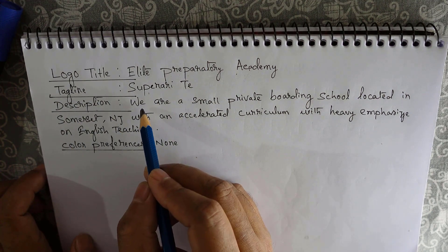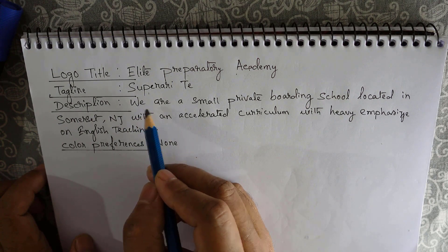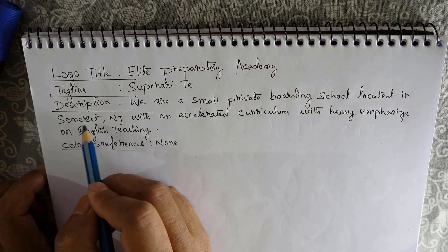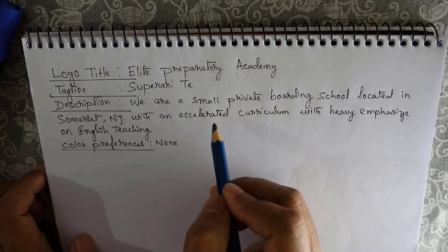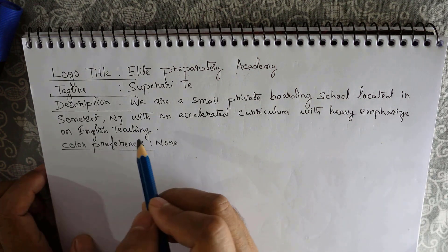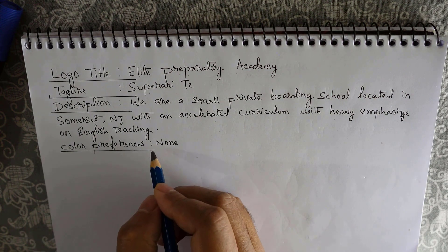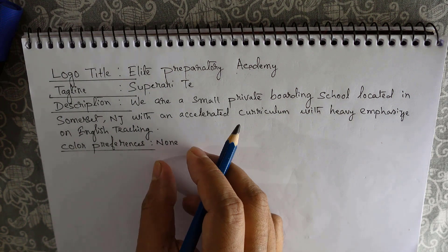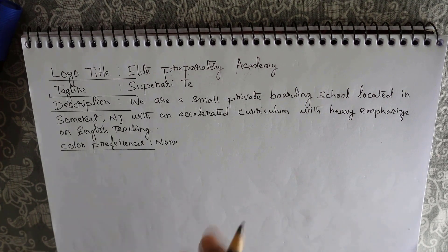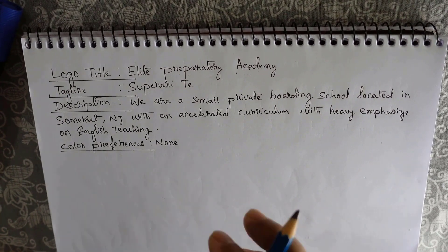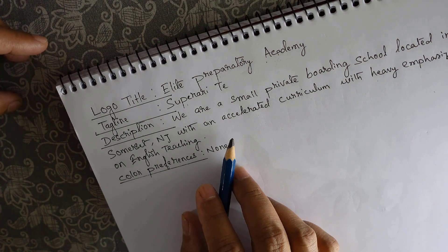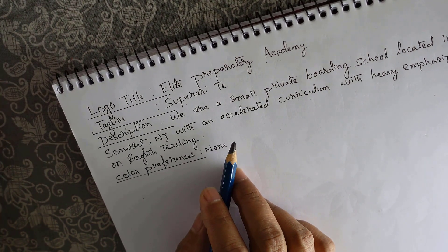The description reads: we are a small private boarding school located in Somerset, NJ, with an accelerated curriculum with heavy emphasis on English teaching. Here are the color preferences — the customer did not recommend any specific color, so we'll choose the best possible colors for this particular logo.